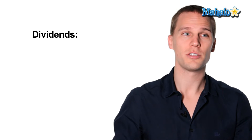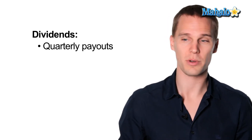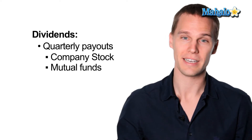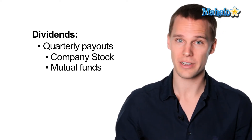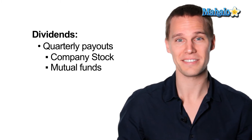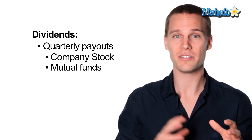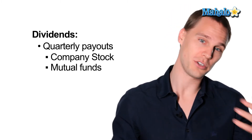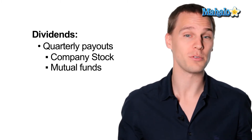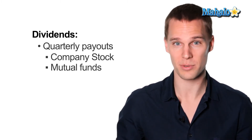Moving on to dividends — dividends are typically quarterly payouts that you'll receive from a company stock or a mutual fund that you own, and they are also treated as ordinary income, unless they're qualified dividends. On the 1099-DIV it will be separated out showing which are ordinary and which are qualified. The difference between ordinary and qualified is simply the tax rate that's applied to them.